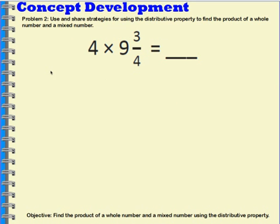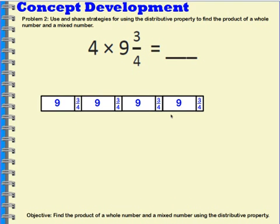Let's take a look at another one. Here we have four times nine and three-fourths. So if I want to think about having nine and three-fourths and then making four copies of it, my tape diagram would look like this.